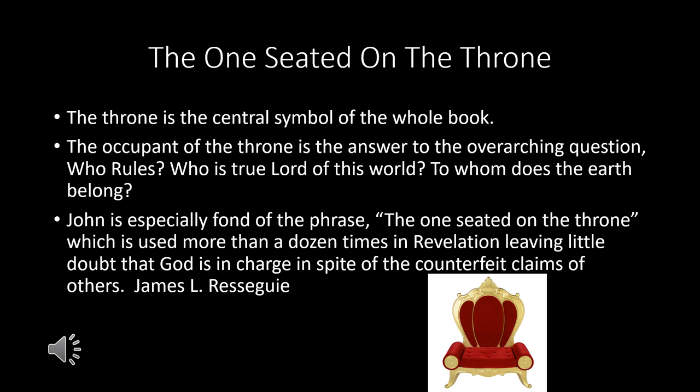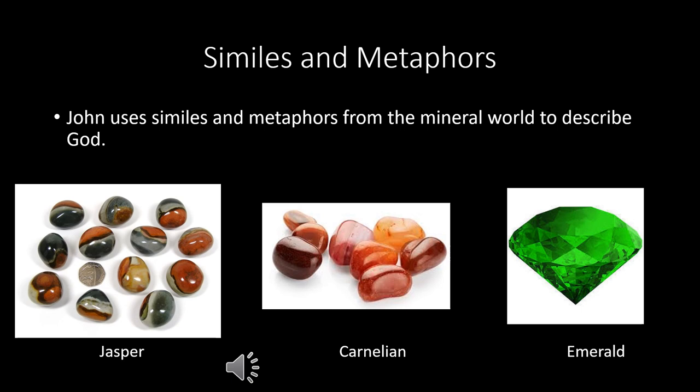The throne is the central symbol of the entire book of Revelation. The occupant of the throne is the answer to the overarching question: Who rules? Who is true Lord of this world? To whom does the earth belong? John is especially fond of the phrase 'the one seated on the throne,' which is used more than a dozen times in Revelation, leaving little doubt that God is in charge in spite of the counterfeit claims of others.